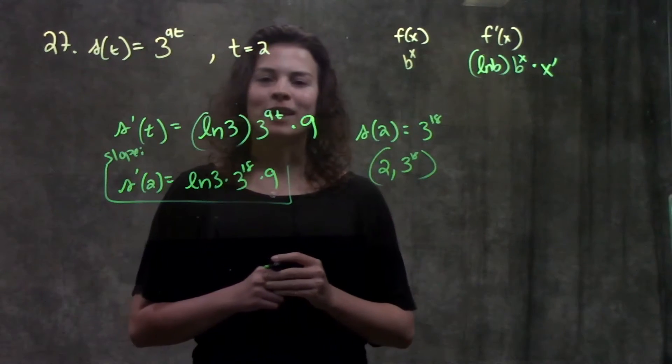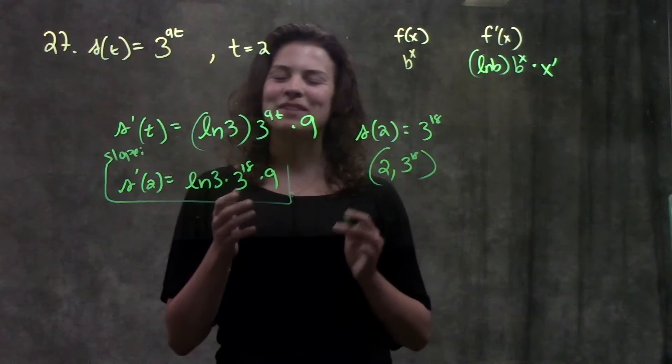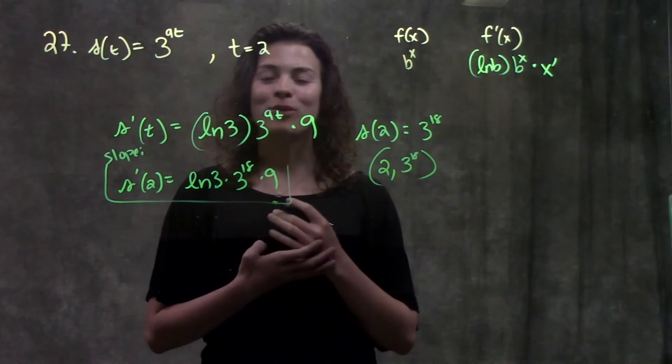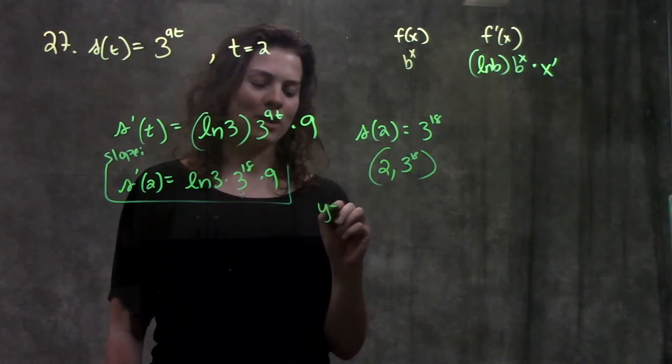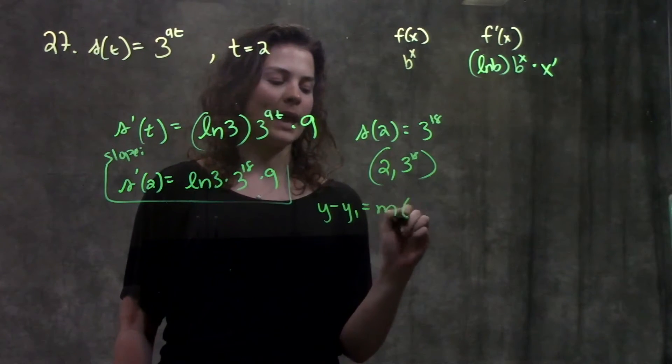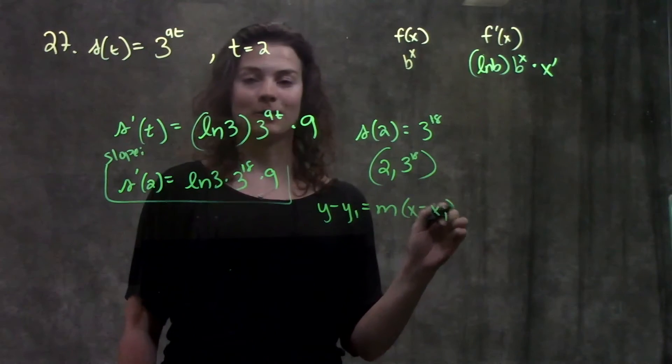Now we're going to put these two things together into the point-slope form to find our equation of the line. Point-slope form tells us y minus y1 equals m times x minus x1.